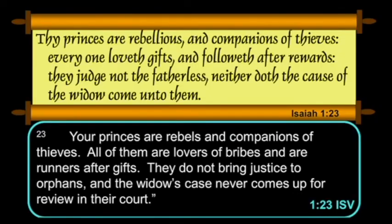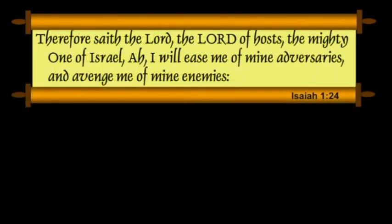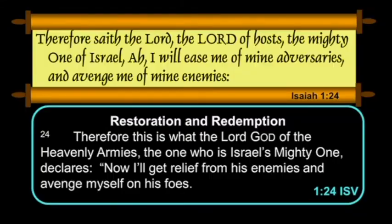The ISV: "Your princes are rebels and companions of thieves. All of them are lovers of bribes and runners after gifts. They do not bring justice to the orphans, and the widow's case never comes up for review in their court." Verse 24: "Therefore saith the Lord, the Lord of hosts, the mighty one of Israel — Ah, I will ease me of mine adversaries, and avenge me of mine enemies." Notice the three titles: the Lord, the Lord of hosts, the mighty one of Israel — I think there are three titles tucked away there. The ISV: "Therefore this is what the Lord God of the heavenly armies, the one who is Israel's mighty one, declares: Now I'll get relief from his enemies, and avenge myself on his foes."